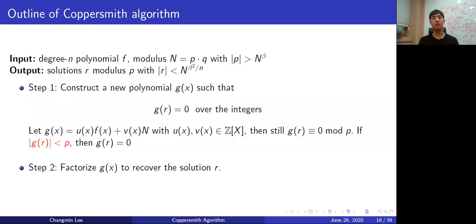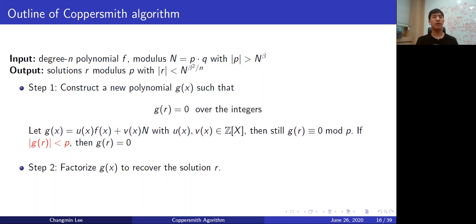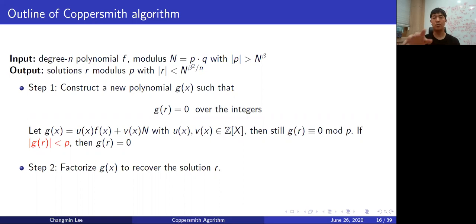Let me go over the proof of this variant of the Coppersmith theorem. The proof is exactly the same as the original one, except for the conditions. We know that polynomial f has a root r modulo P, and its linear summations also have the same root. In the original work, we find polynomial G such that the size of G(r) is bounded by N, but in this case it must be bounded by P, which is a factor of N. So we need to find a shorter vector, and the necessary conditions get more complicated, but the whole structure is exactly the same.